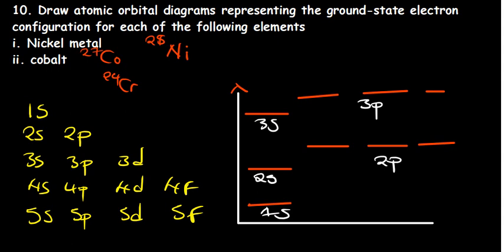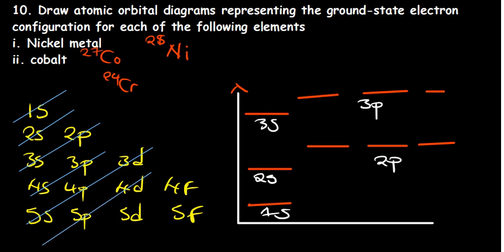Let's start with Chromium since it only goes up to 24. The filling order we follow is: 1s, 2s, 2p, 3s, 3p, 4s, 3d, 4p, 5s, 4d, 5p, 6s. For Chromium in period 4, we can predict where the configuration will end.